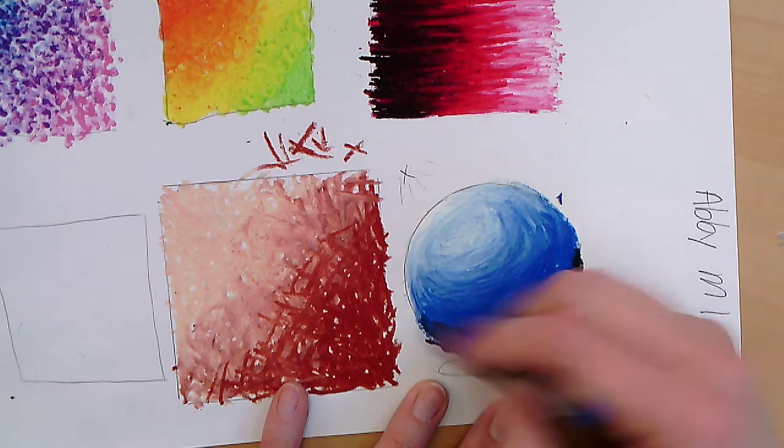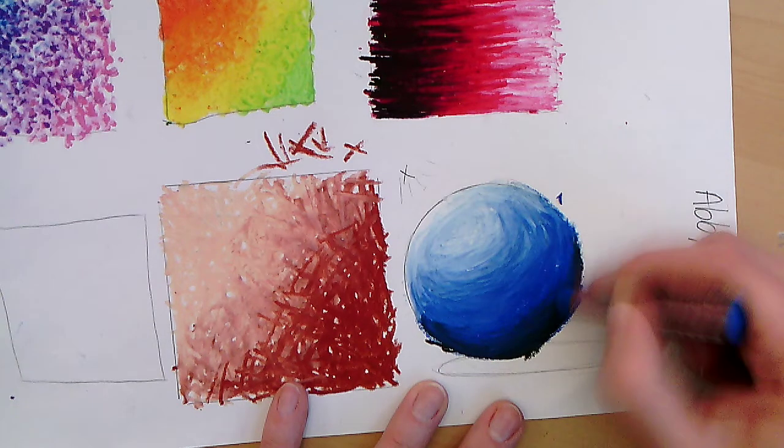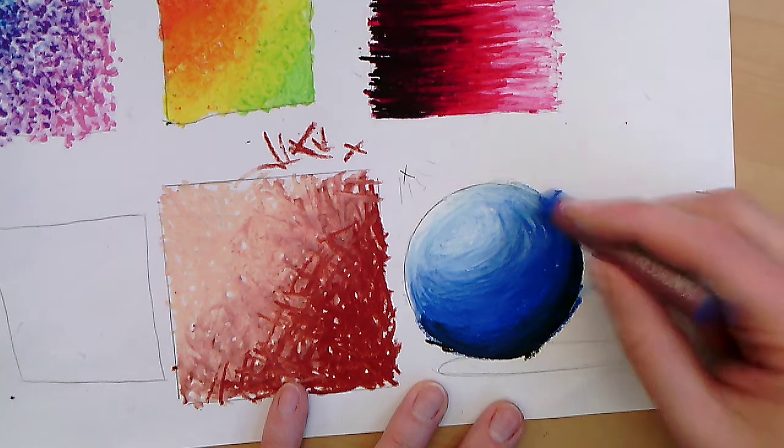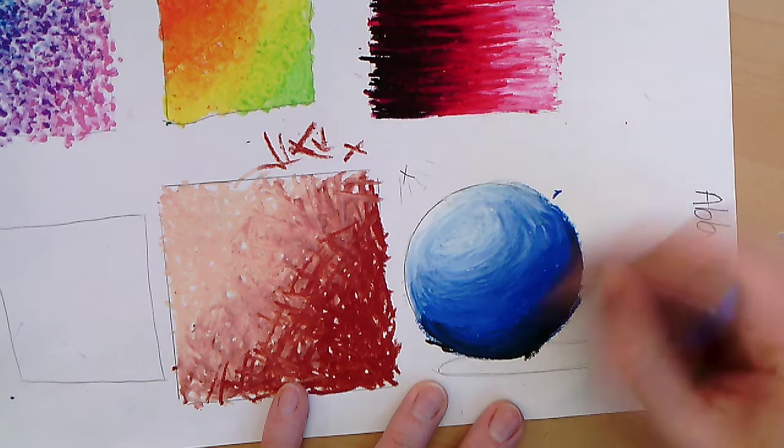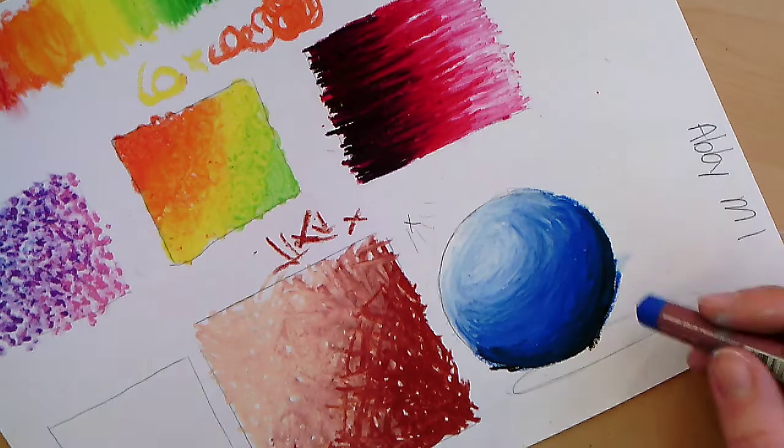Making strokes so that it allows the oil pastel to blend together. Now I'm taking up some of that dark and turning it around on the side. I don't have any whites of my paper showing anymore. You can always shake your paper off and get rid of that junk.